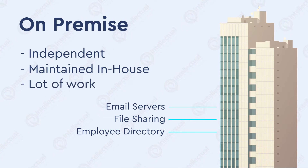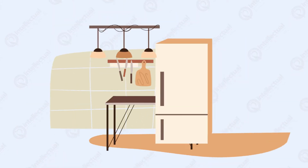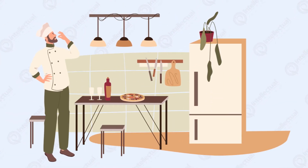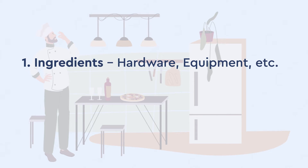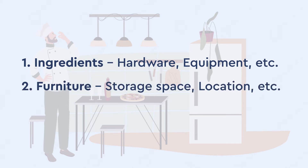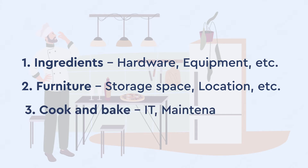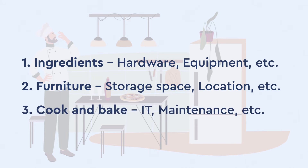Now to solidify the on-premise deployment concept, we can compare the model to a real-life example. Let's envision this scenario with pizza. Let's suppose that you're looking to eat homemade pizza for dinner. Well, homemade pizza requires you to buy all the ingredients, and you must provide a dining table for yourself to eat on. On top of that, you also have to cook and bake the pizza. Now that's a lot of work for a simple pizza dinner. This scenario represents the on-premise model, as everything has to be deployed and maintained by the organisation in their own respective building.